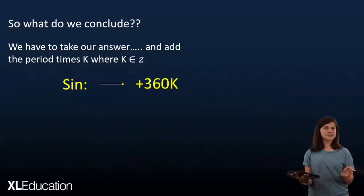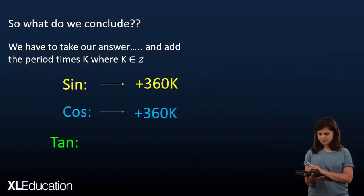So, for our sine function, we add 360 degrees for one period, same with our cos function. And for our tan function, we know that our period is only 180 degrees.